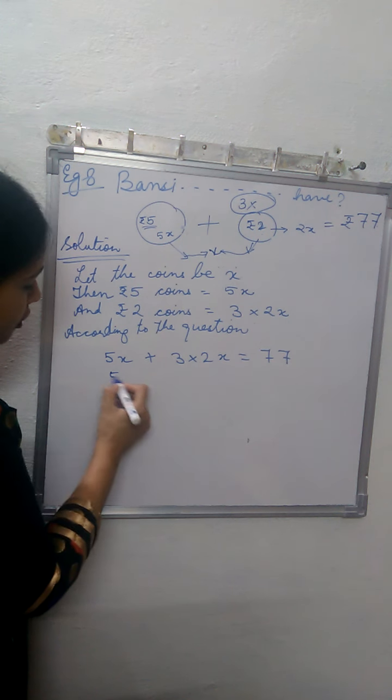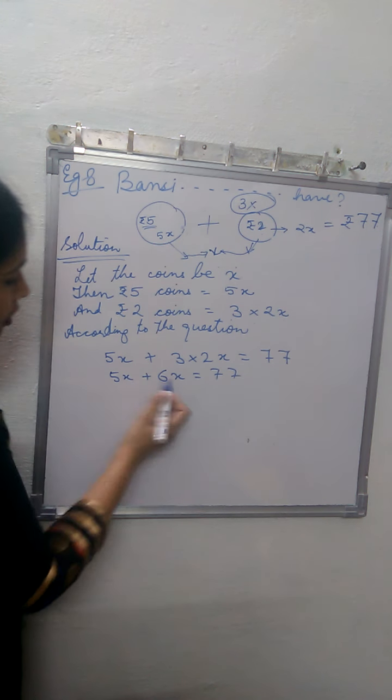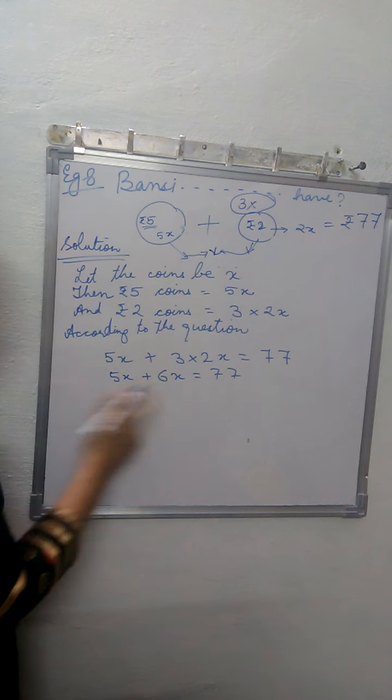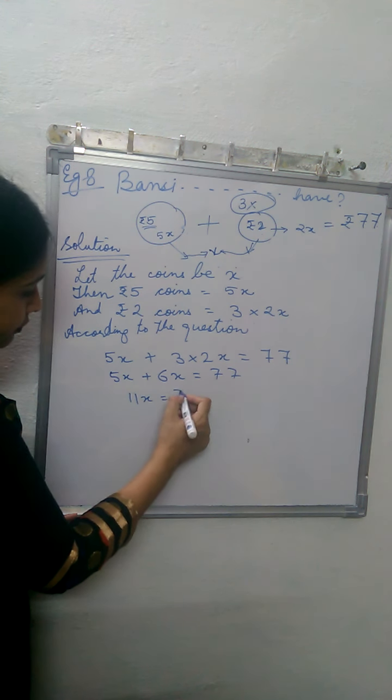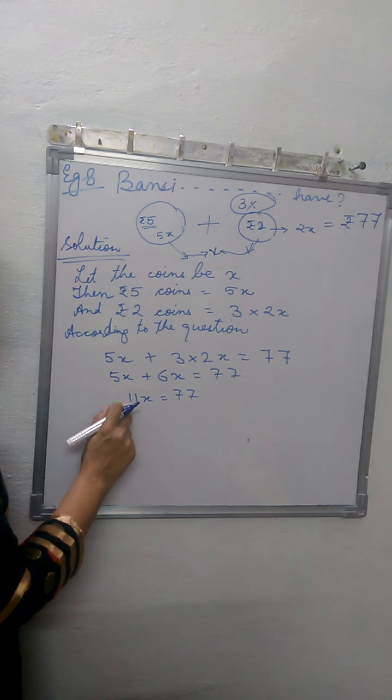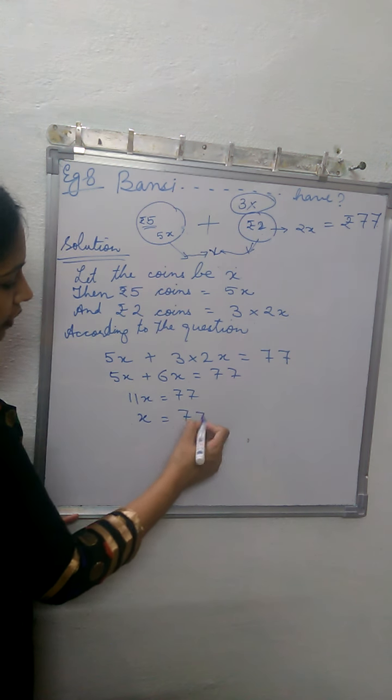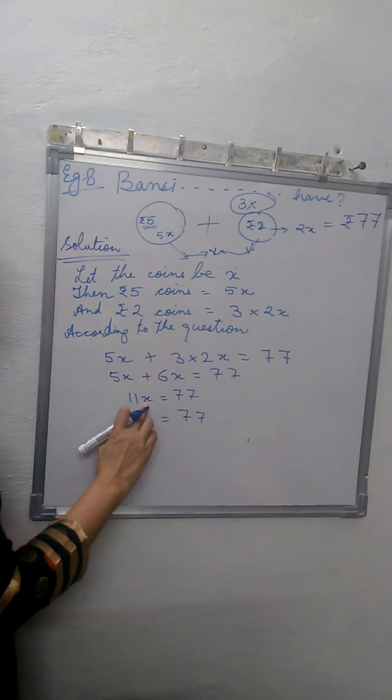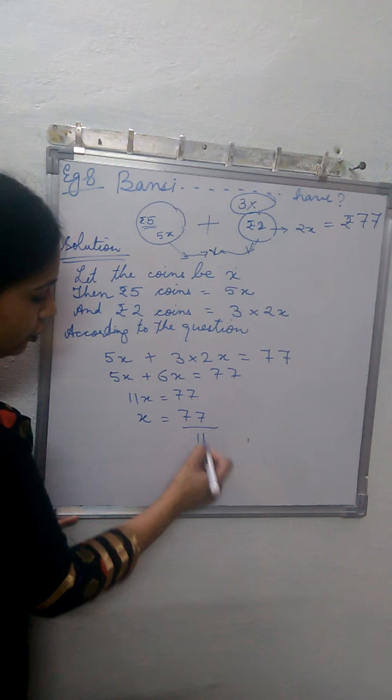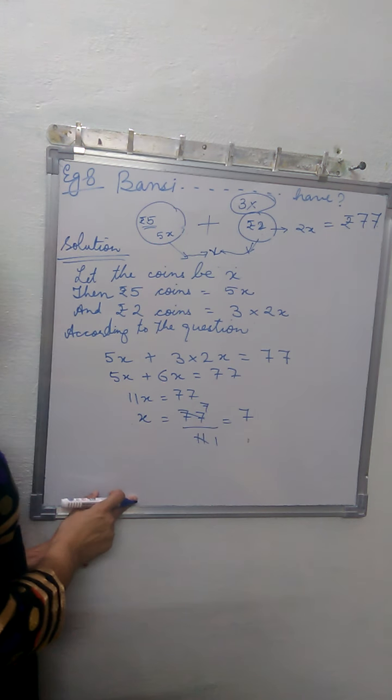First, we multiply 3 to the 2X, giving 6X. So 5X plus 6X gives us 77. 5 plus 6 gives us 11X. Both are X, so we can add them to get 11X equals 77. Now we remove this 11 to get the value of X. The 11 comes to this side and its sign changes—it's in multiplication, so it becomes division. The value of X is 7.